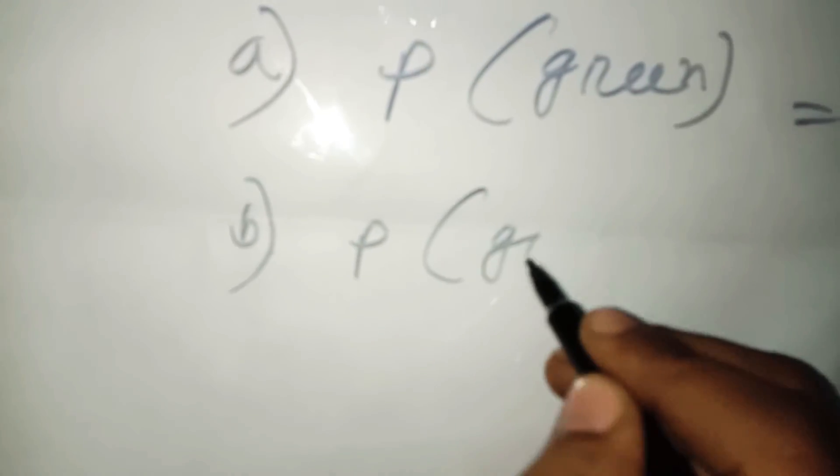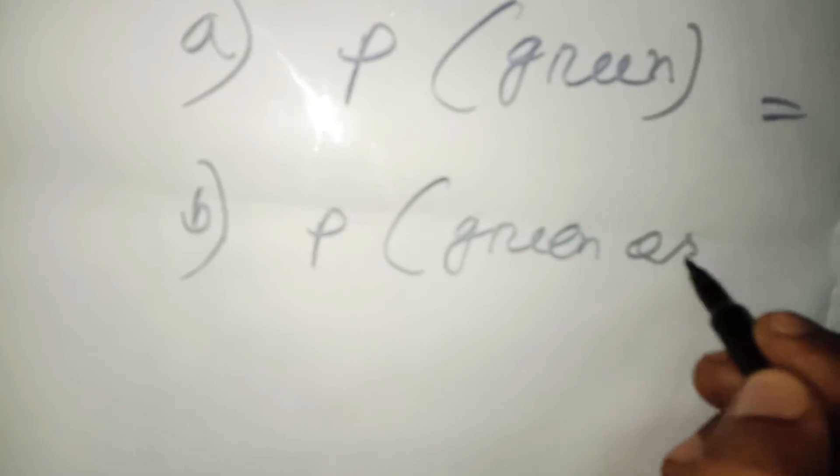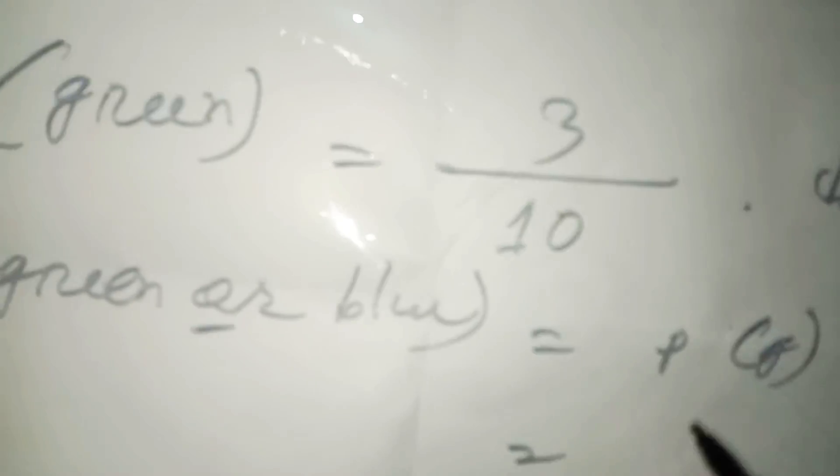B. P of green or blue is equal to P of green plus P of blue. P of green, that means 3 divided by 10, plus P of blue - total number of sections is 10 and blue sections is 2, so 2 divided by 10. 3 plus 2 equals 5 divided by 10 equals 1 by 2. So here is the answer.